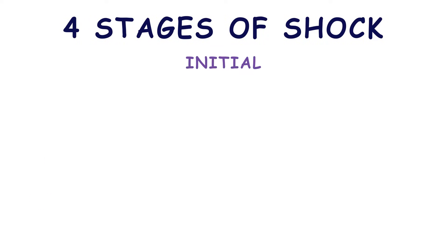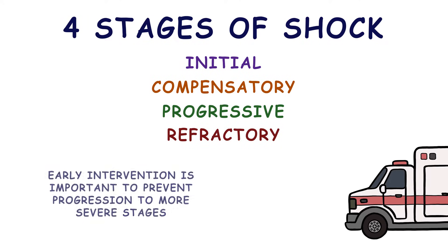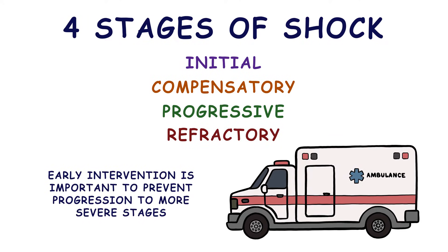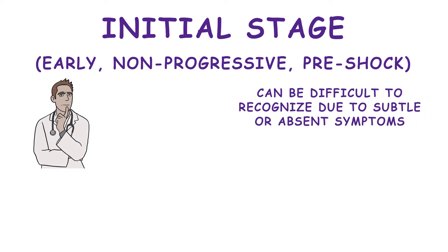The four stages of shock are initial, compensatory, progressive, and refractory. Early intervention is important to prevent progression to more severe stages. The initial stage, also called the early, non-progressive, or pre-shock stage, may be difficult to recognize due to subtle or absent symptoms.